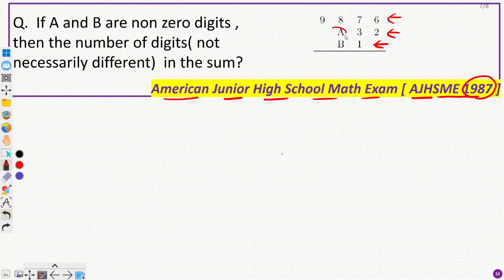And we are given that A and B are non-zero digits. Then we have to find the number of digits in sum. We don't have to find the sum because we don't know the digits. But we have to find the number of digits in this.